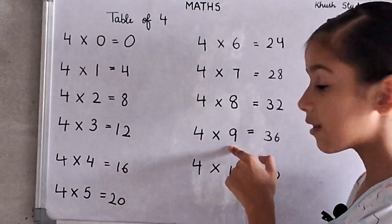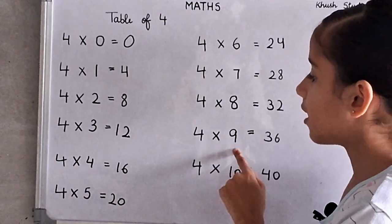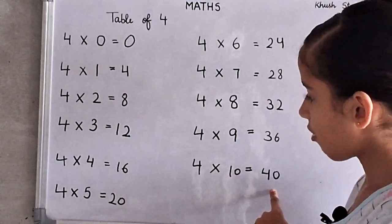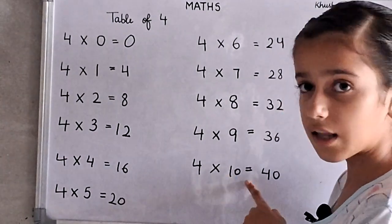For 9's, 36. For 9's, 36. 4 times 10's, 40. 4 times 10's, 40.